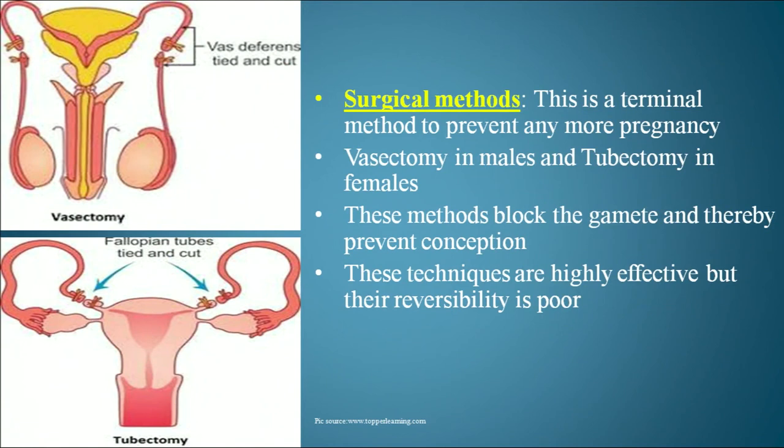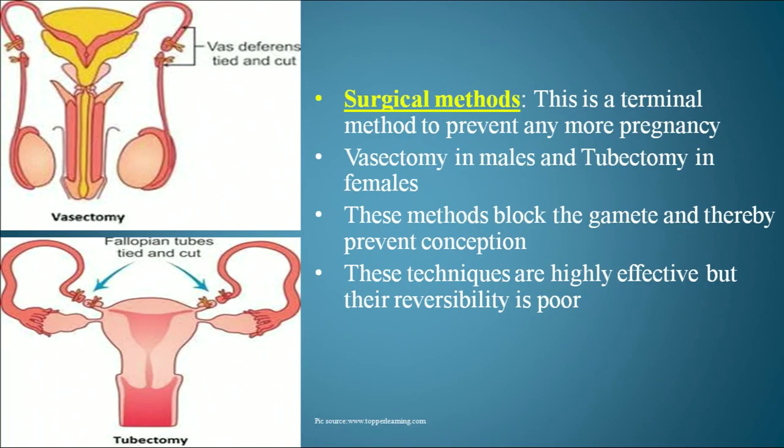Surgical methods are terminal methods to prevent any further pregnancy. Vasectomy is performed in males and tubectomy in females. In vasectomy, the vas deferens is cut and tied with a suture. In tubectomy, the fallopian tube is cut and tied with a suture. These methods block gamete transport and thereby prevent conception. These techniques are highly effective but their reversibility is poor.